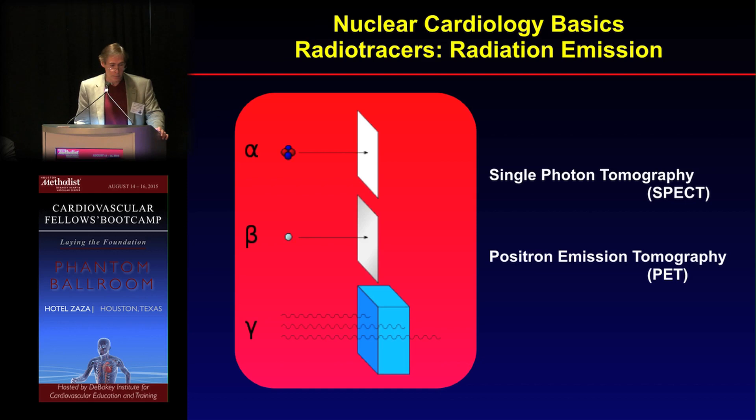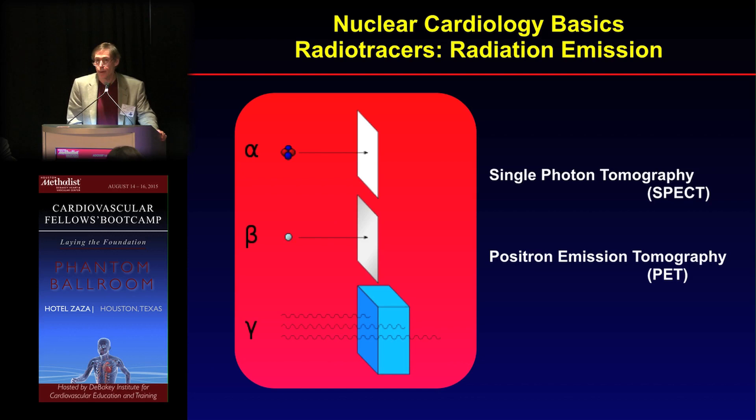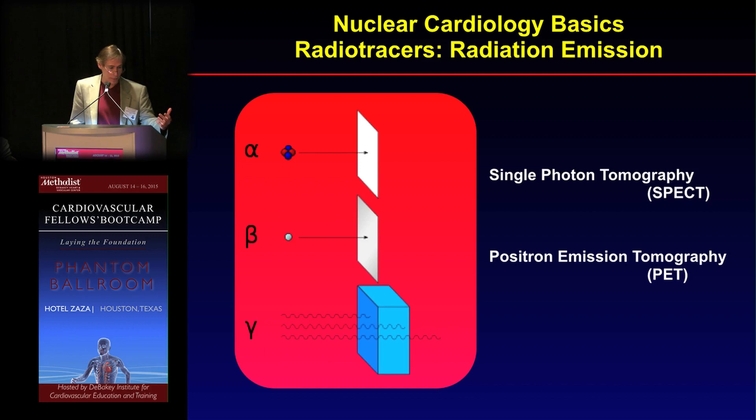In nuclear cardiology, whether it's single photon tomography or positron emission tomography, we look at gamma radiation. Alpha radiation is basically stopped by a piece of tissue paper, beta radiation is stopped by a sheet of plain paper, and only lead can stop gamma rays. So when we inject someone with a radiopharmaceutical, it has to come out of the body, and the only way we can see that is with gamma radiation.